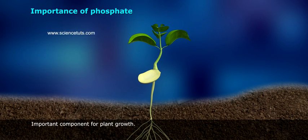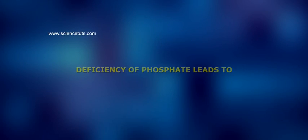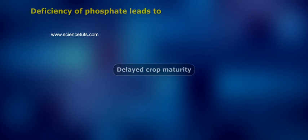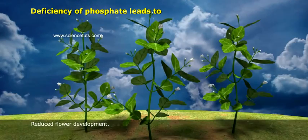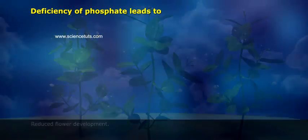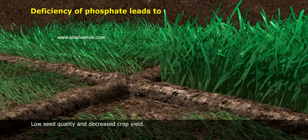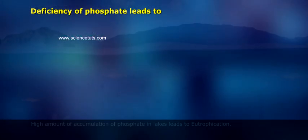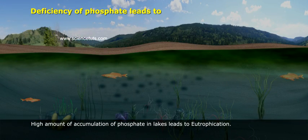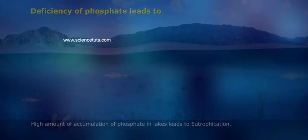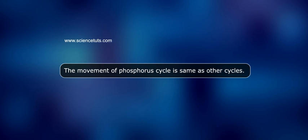Phosphate is an important component for plant growth. Deficiency in phosphate leads to delayed crop maturity, reduced flower development, low seed quality, and decreased crop yield. High accumulation of phosphate in lakes leads to eutrophication.